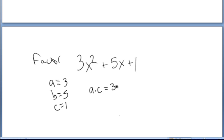a times c in this case is 3 times 1, or just 3. I need to find two numbers that multiply to 3 and at the same time add to positive 5.